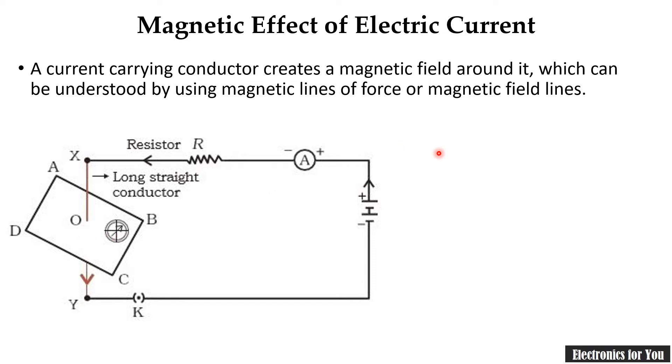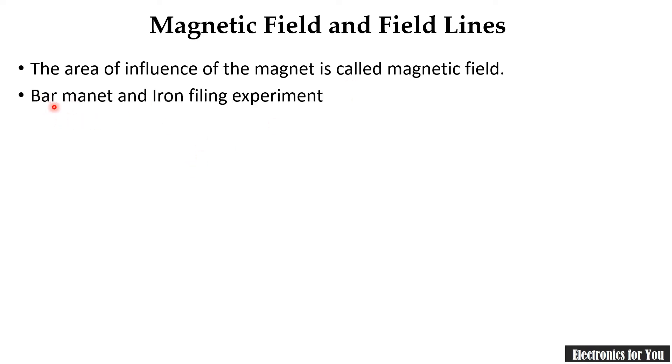As it is mentioned that this concept can be understood by using the concept of magnetic lines of force or magnetic field lines. So, let us talk about magnetic field lines first. The area of influence of a magnet is called magnetic field. So, magnetic field is nothing but the area of influence of the magnet. It can be expressed by using the bar magnet and iron filing experiment.